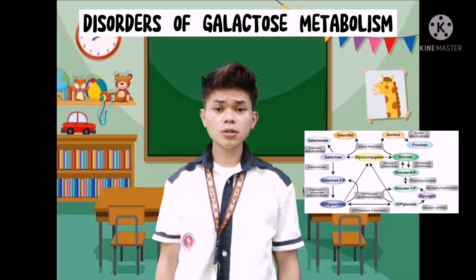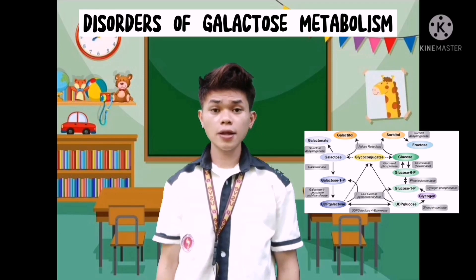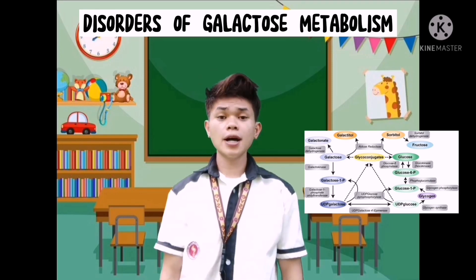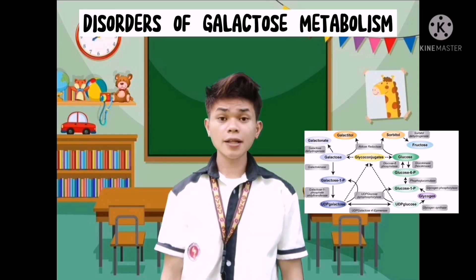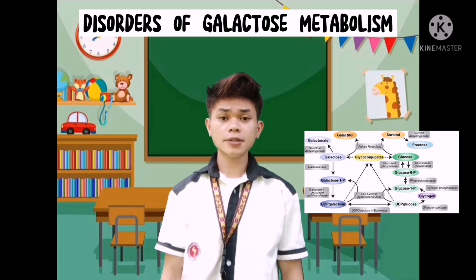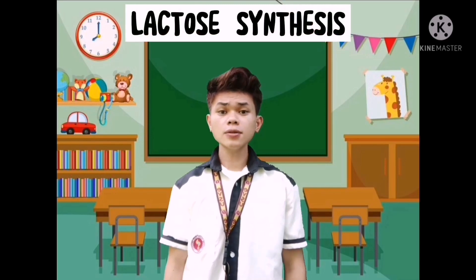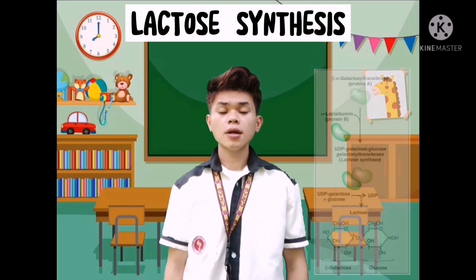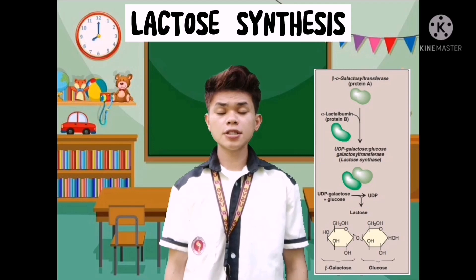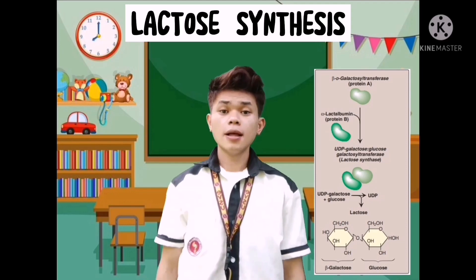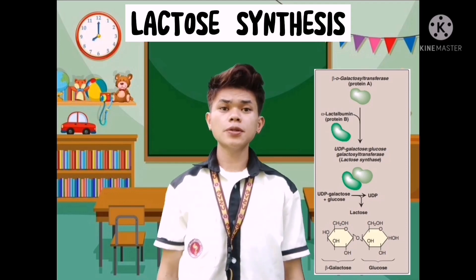Regarding disorders of galactose metabolism: GALT is deficient in individuals with classic galactosemia. In this disorder, galactose 1-phosphate and therefore galactose accumulate in cells. The accumulated galactose is shunted into side pathways such as galactitol production, catalyzed by aldose reductase — the same enzyme that converts glucose to sorbitol. Lactose is a disaccharide consisting of a molecule of galactose attached by a linkage to glucose; lactose, known as milk sugar, is produced by mammary glands of most mammals.